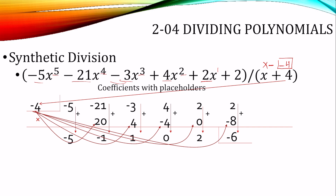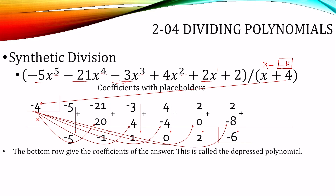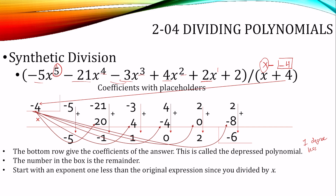We put a box around the last number. The bottom row gives you the coefficients of the answer — we call this a depressed polynomial. It's depressed because it's one exponent less: we had x to the fifth and divided by x, giving x to the fourth — one degree less. The number in the box is the remainder. So starting one exponent less than the original, the answer is negative 5x to the fourth, minus x cubed, plus x squared, plus 0x (which we don't write), plus 2, and then the remainder: plus negative 6 over x plus 4.